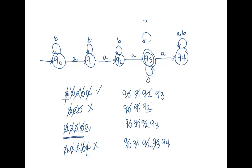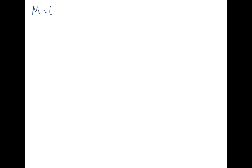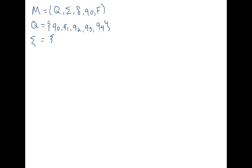So this is our state diagram for machine M. Let's make this more formal. Remember that M is a 5-tuple: Q, sigma, delta, Q0, and F. Q was our set of states: Q0, Q1, Q2, Q3, and Q4. Sigma was A and B, our input symbols. Q0 was our start state. And F, our set of final states, in this case Q3 — that was where we could accept.